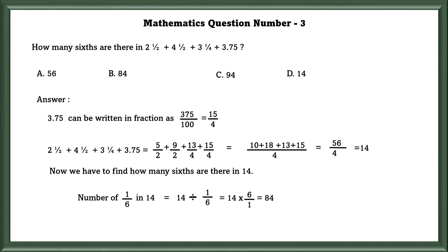Now we have to find how many sixths are there in 14. Number of 1/6 in 14 is equal to 14 divided by 1/6. Since you cannot divide a fraction, we have to reciprocal it and multiply it, which is equal to 14 times 6/1, that is equal to 84. There are 84 sixths in the given equation.